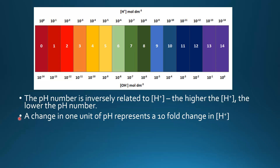A change in one unit of pH represents a tenfold change in hydrogen ion concentration. So if we have a change from pH 1 to pH 2, the hydrogen ion concentration differs by a factor of 10. And if we have a change in pH number from 2 to 4, the concentration of hydrogen ions changes by a factor of 100.